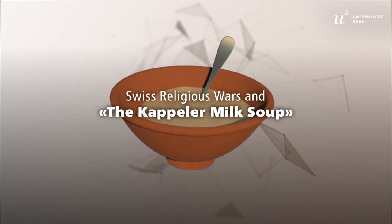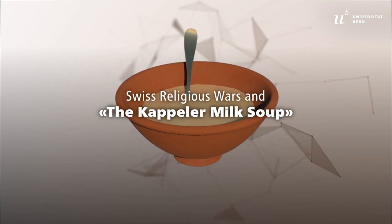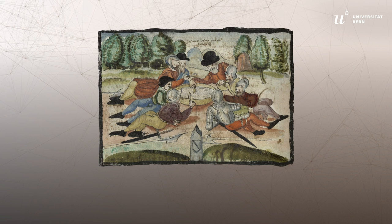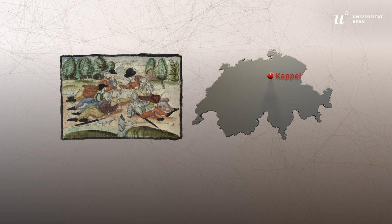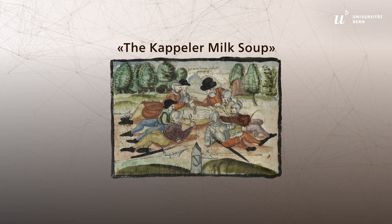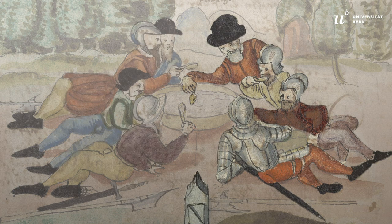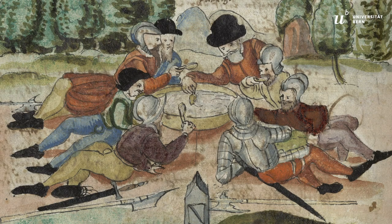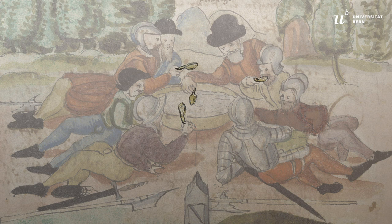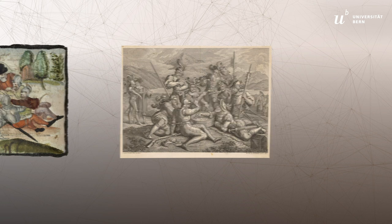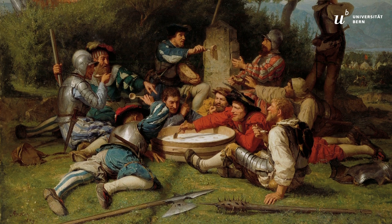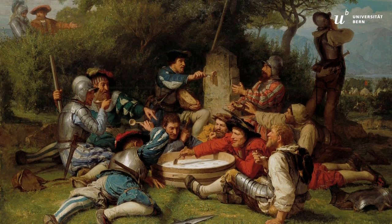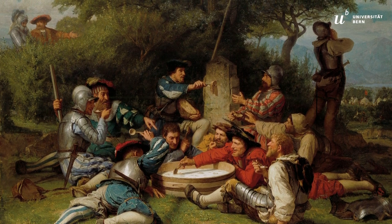Eating instead of fighting: Swiss religious wars in the 16th century and the Kappeler milk soup. This painting by Heinrich Thoman dates back to 1605 and depicts a meal said to have taken place in 1529 near the town of Kappel, situated in the heart of the old Swiss confederacy. The painting is called The Kappeler Milk Soup. Eight men, clearly from two opposing groups, are gathered around a bowl of soup. Most of them are armed and there are weapons on the ground, yet they are sharing a meal together, each equipped with their own wooden spoon. Numerous artists chose to paint this motif, which has since become very famous. We cannot tell for sure if the story is fact or fiction, but this pictorial window to the past has become a symbol of how to handle conflicts peacefully. In order to understand why, we have to delve deeper into history.